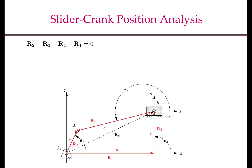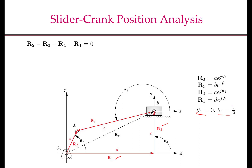The vectors R1, R2, R3, and R4 are shown in this slide. The length of R4 is the offset length C, and the angle theta 4 is 90 degrees for this picture. The vectors R2, R3, R4, and R1 can be written in complex number form using the length and angles of the corresponding vectors. Substituting R1, R2, R3, and R4 into the vector loop closure equation gives the equation in complex exponential form.